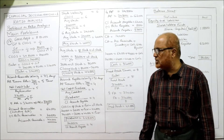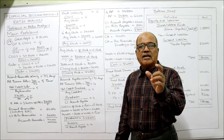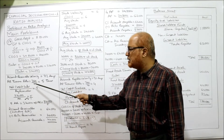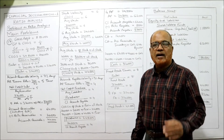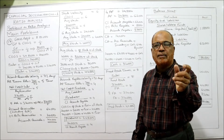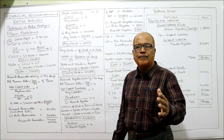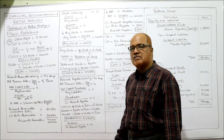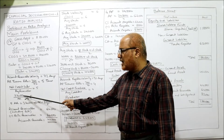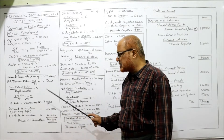Account receivable velocity is 72 days, but we want it in times. Year = 360 days, so account receivable turnover ratio = 360/72 = 5 times. The formula is net credit sales divided by average account receivables, but due to lack of information we take sales divided by closing receivables. So 3,20,000 / AR = 5, giving AR = 3,20,000/5 = ₹64,000.